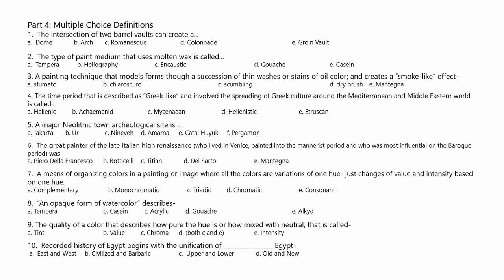The quality of color that describes how pure the hue is, or how mixed with the neutral — this was a trick question because there were a lot of right answers. E, intensity, counts as right. C, chroma — although we didn't learn that in class — is also correct. And D, both C and E, is also correct. So all three of those would have given you fully the right answer.